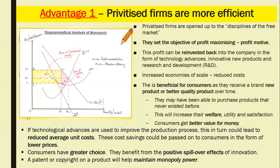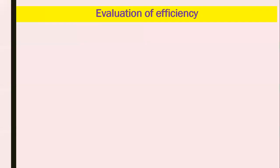Consumers subsequently have greater choice. By privatising firms and opening up to the disciplines of the free market, you actively encourage other private firms to operate in the industry as well. You remove that single government-owned firm and allow whoever can meet the barriers to entry to provide a good or service in that industry. Having more than one firm can subsequently help to reduce costs. The benefit of this could also lead to positive spillover effects of innovation, and a patent or copyright on a product will help maintain monopoly power.